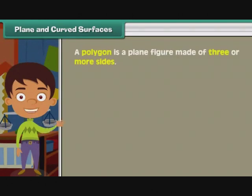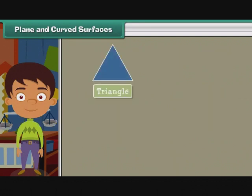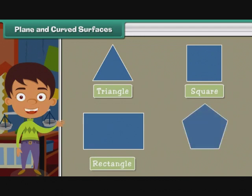Polygon. A polygon is a plane figure made of three or more sides. Various types of polygons are triangle, square, rectangle, and pentagon.